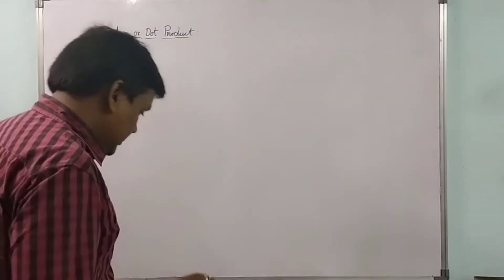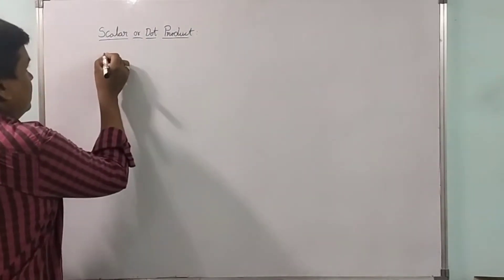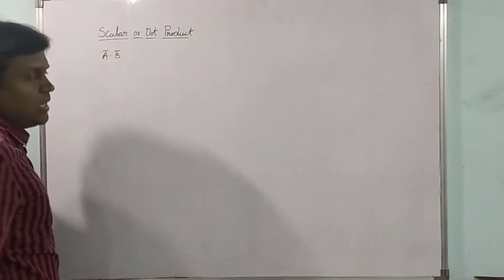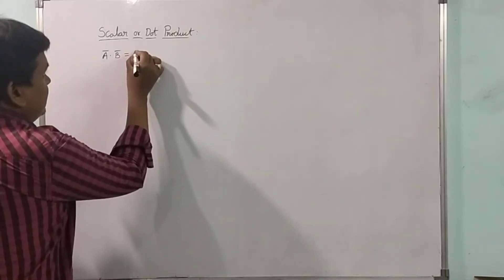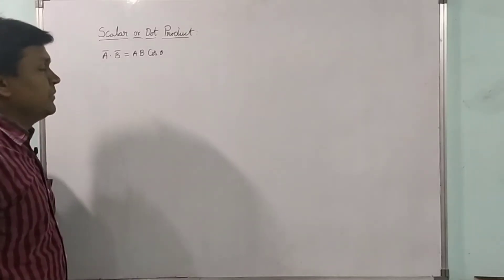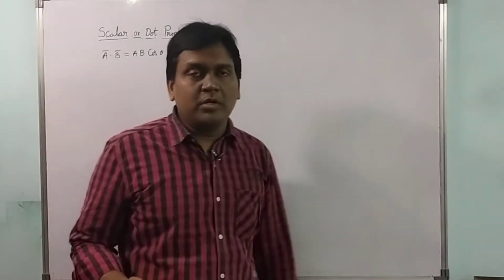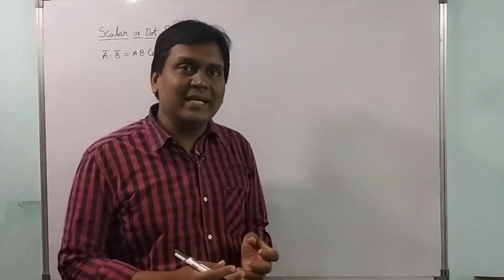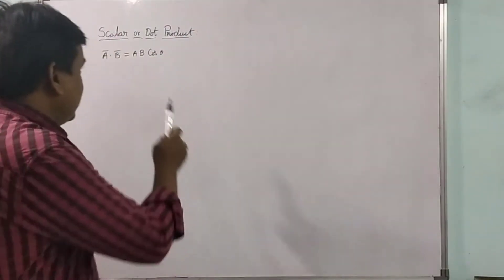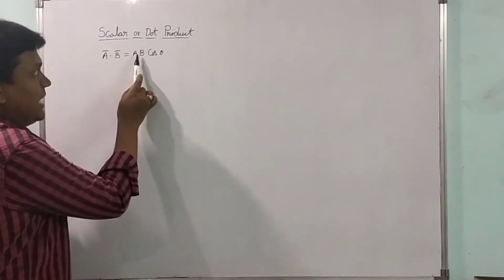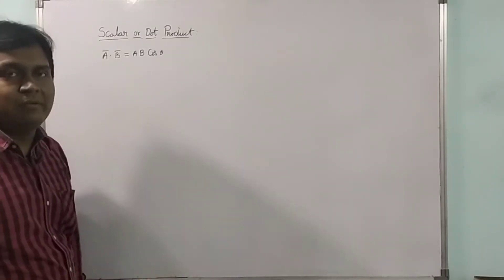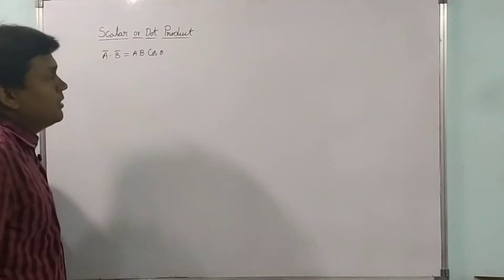In this session we are going to learn about the dot product or scalar product. If a-bar is a vector and b-bar is a vector, then a-bar dot b-bar equals a·b·cos(θ). By doing the dot product of two vectors we get a magnitude, that means we get a number. Here 'a' and 'b' are the magnitudes and cos(θ) represents the angle between the two vectors.